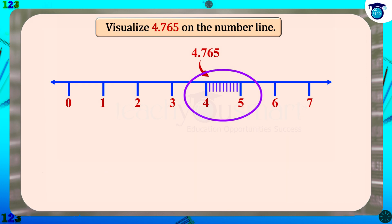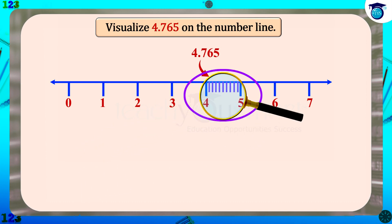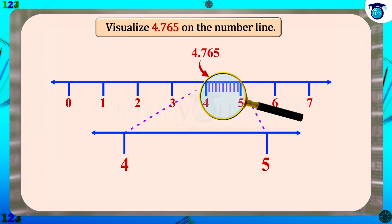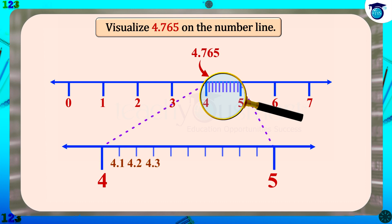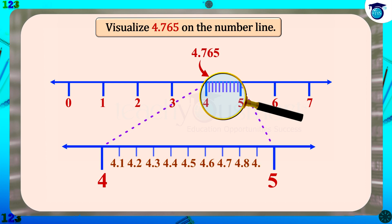Now it is difficult to observe these points of division between 4 and 5, so take a magnifying glass and look at the position between 4 and 5. Each point represents 4.1, 4.2, etc. to 4.9. 4.76 lies between 4.7 and 4.8.